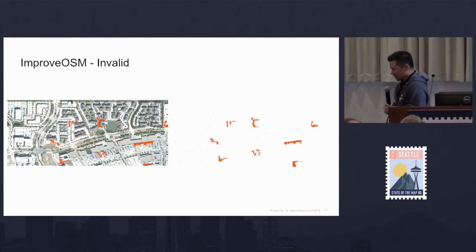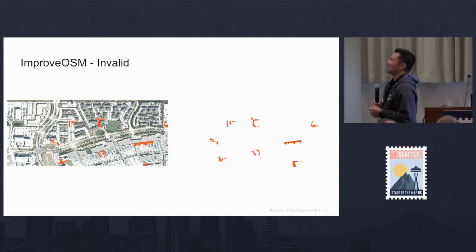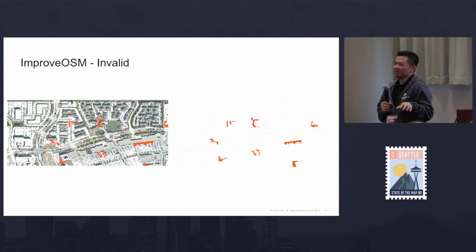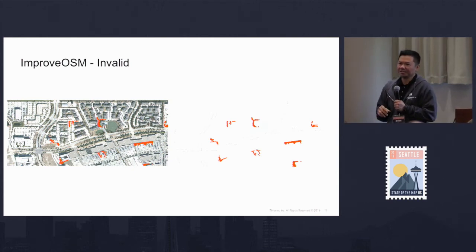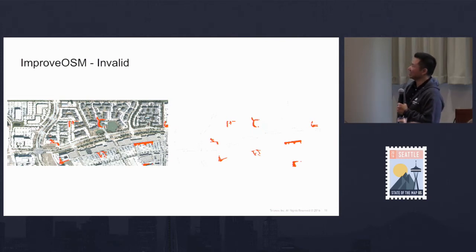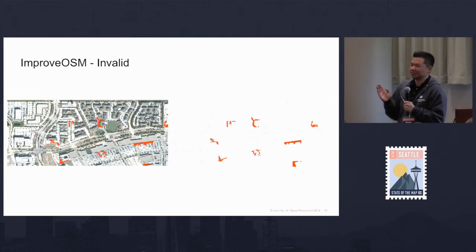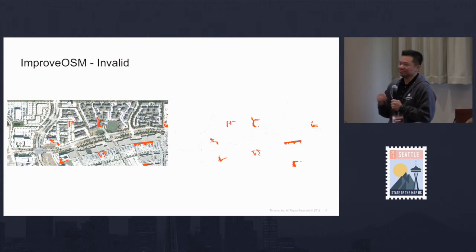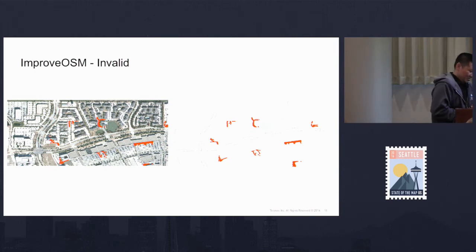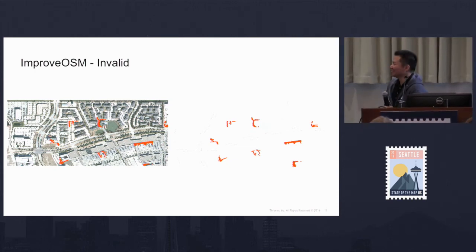For the invalids, one small side effect we have is that when we plot the probe data, there are often times where the driver will drive into parking lots. We're able to see certain places where there was a concentrated level of probe data in parking lots - those are not actual roads. Those can be sorted out by marking as invalid, and we can look at other places for the true missing roads.